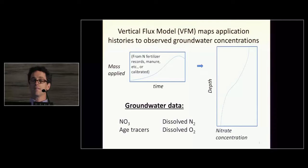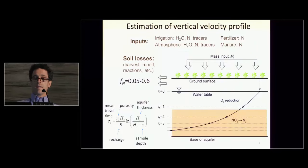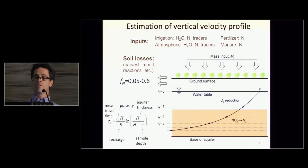It's important in many cases to have dissolved gas analyses so we can estimate nitrogen gas from denitrification and dissolved O2, which is important for denitrification reactions. Around each well, we're assuming homogeneous, uniform properties. Mass inputs at the ground surface can come from sources such as irrigation, atmospheric sources, fertilizer, and manure. Water, nitrogen, age tracers, and whatever other tracers you want to include come in through those sources.